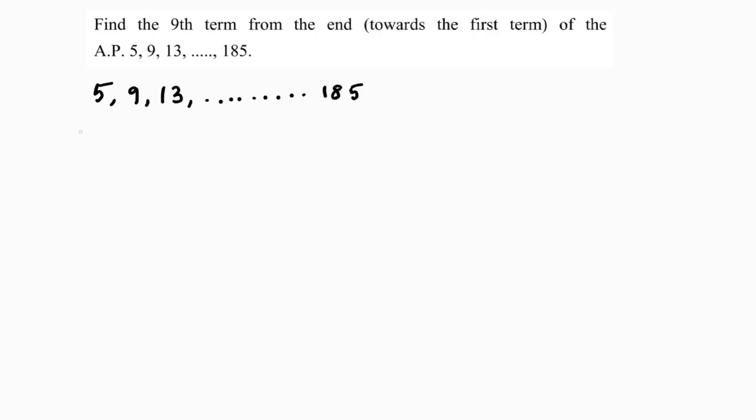So here the first term, if I take the series in this way, the first term is 5. Common difference is a2 minus a1, so second term is 9 minus 5, which is 4. Common difference is 4.